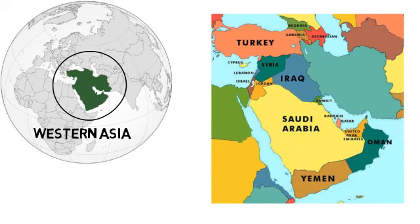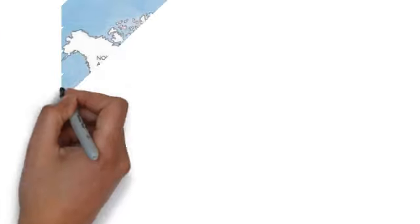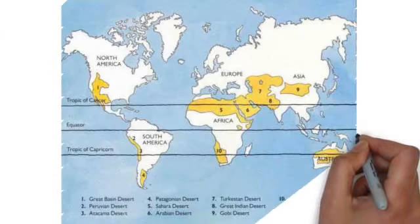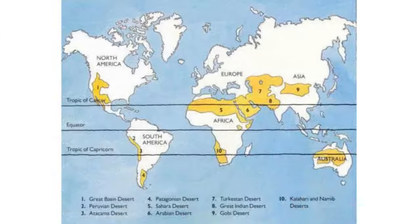Students, besides Saudi Arabia, the other important deserts in the world are the Sahara Desert and Kalahari Desert in Africa, the Arabian Desert and Thar Desert in Asia, the Great Basin Desert in North America, the Atacama Desert in South America, and the Great Australian Desert in Australia.